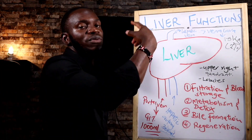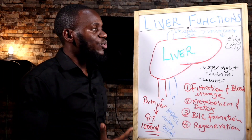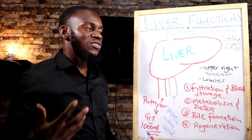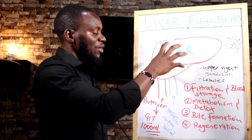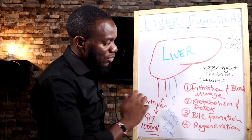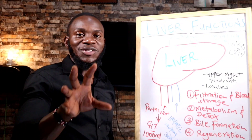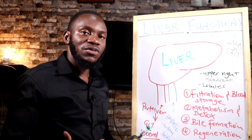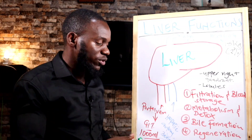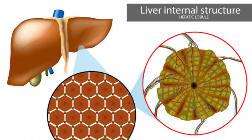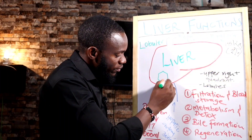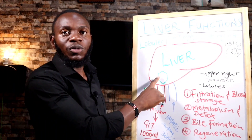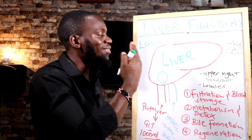Remember, this is deoxygenated blood going to the heart to be pumped into the lungs to get oxygenated. So basically, that is the structure of the liver. As blood comes into the liver, we have functional units called lobules. These lobules look like this — they are hexagonal. Inside the liver, we have hundreds of thousands of these lobules.